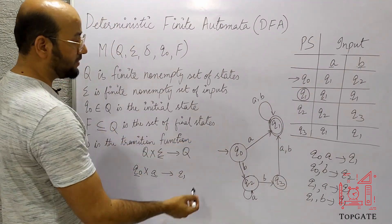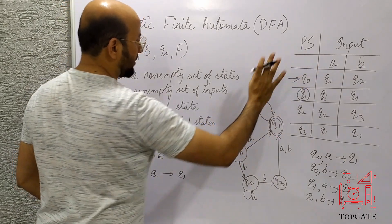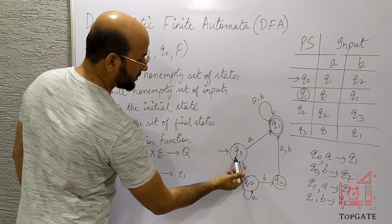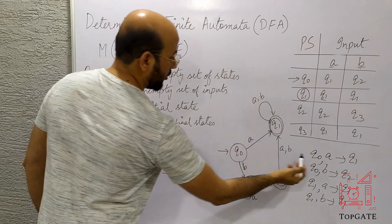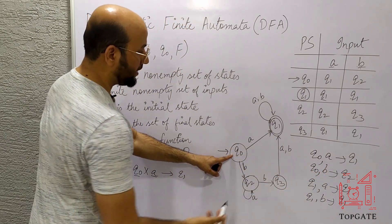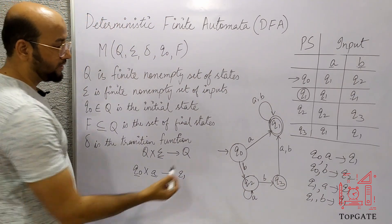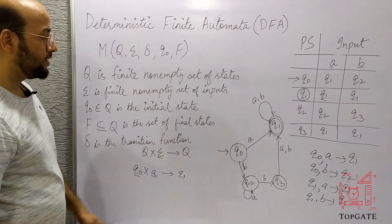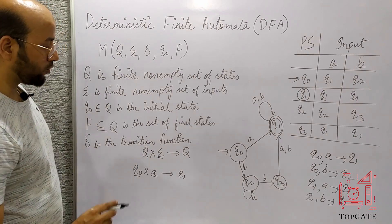The second representation is the transition graph, which is the graphical representation of the transition table. The initial state is Q0. On Q0, input A is applied and we move to Q1. On Q0, input B is applied and we move to Q2, and so on. The double circle means the final state.